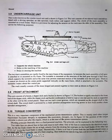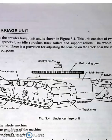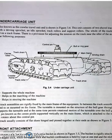The next is undercarriage unit, also known as the crawler travel unit. The unit consists of two shovel track assemblies fitted with a driving sprocket, an idler sprocket, track rollers, and support rollers. The whole of the track assembly is mounted on a track frame. There is a provision for the spring tension on the track near the idler of the assembly. This serves the following purposes: to support the whole machine, number two is to help in traveling of the machine, number three is to help in steering the machine.